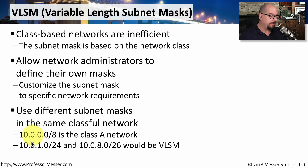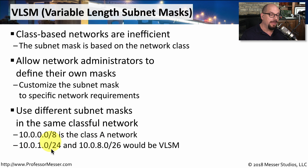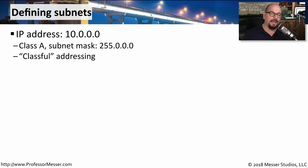For example, if you had the network 10.0.0.0/8, that would be a traditional class A network. We could use variable-length subnet masks to have many different kinds of networks, all with different masks. For example, you might have 10.0.1.0 with a 24-bit subnet mask, and you might also have a 10.0.8.0 network with a 26-bit subnet mask. Those differences in the subnet masks and the ability to design our network in a way that makes sense for what we're doing — rather than designing it around limitations of an IP address — are what we call variable-length subnet masks.